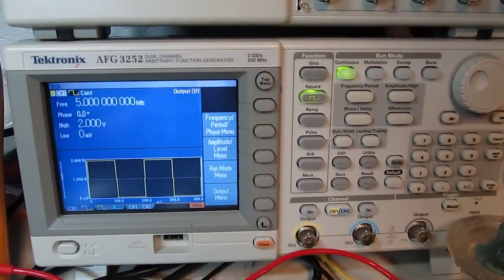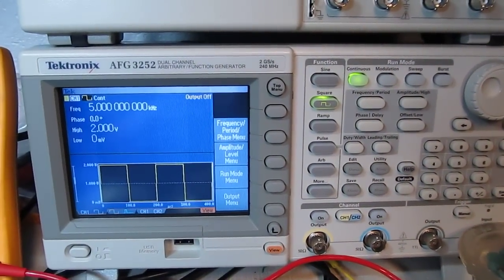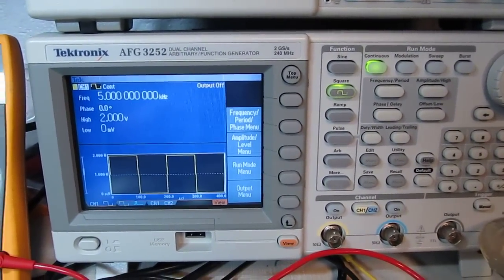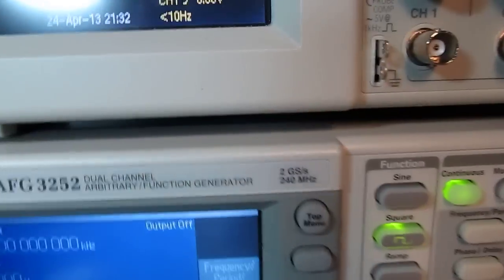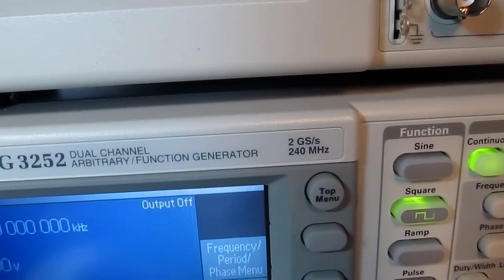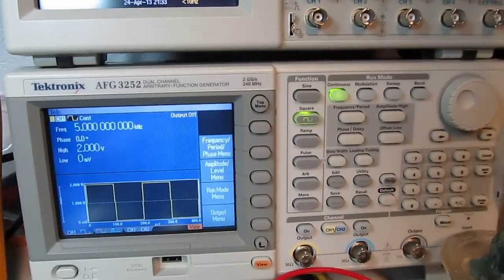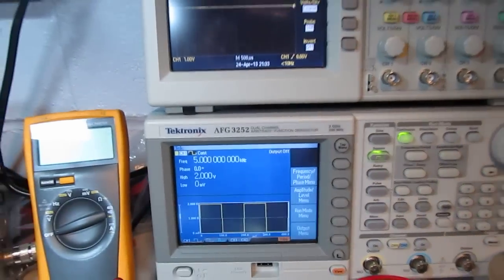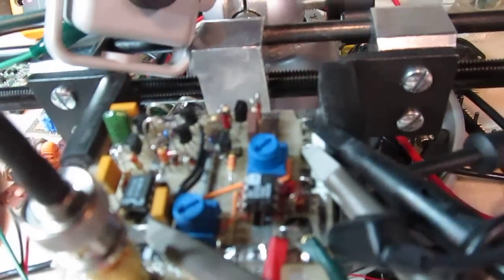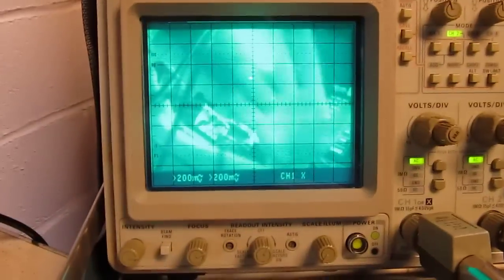This guy down here, great little signal generator, AFG 3252, two channels up to 240 megahertz. Can do some arbitrary waveforms, can do sweeps and bursts and modulation and all that kind of stuff. Great little unit. Actually this is the little circuit that is converting my video into the X and Y signals to look at on the scope over here. So you can kind of see that going on.